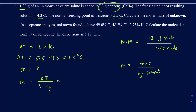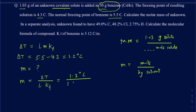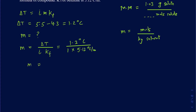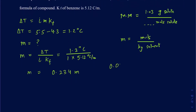Delta T is 1.2°C. Since it's a covalent compound, i equals 1, and the Kf value for benzene is 5.12°C per molality. So molality equals 1.2 divided by 5.12, which gives you 0.234 mol/kg. Now we're going to use this molality and the amount of benzene — which is the solvent — to figure out the moles. We started with 30 grams of benzene; converting to kilograms by dividing by 1000 gives 0.03 kilograms of solvent.